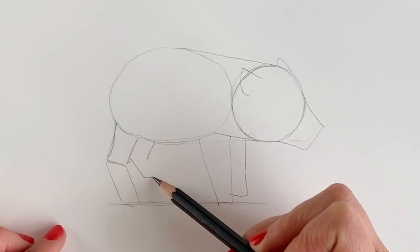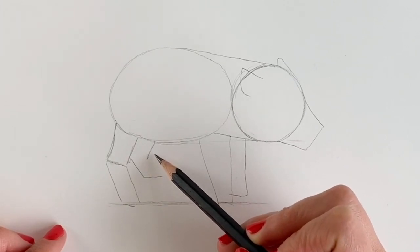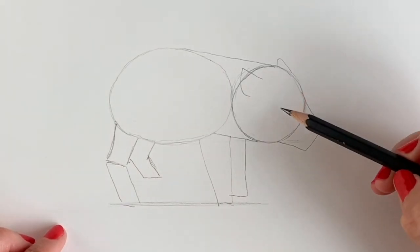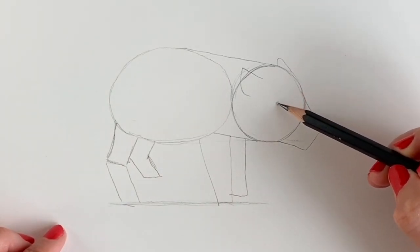Now for the other hind trotter, so here, line coming all the way down and across like that. And last but not least, we're going to add the little eye before we get to the next step.